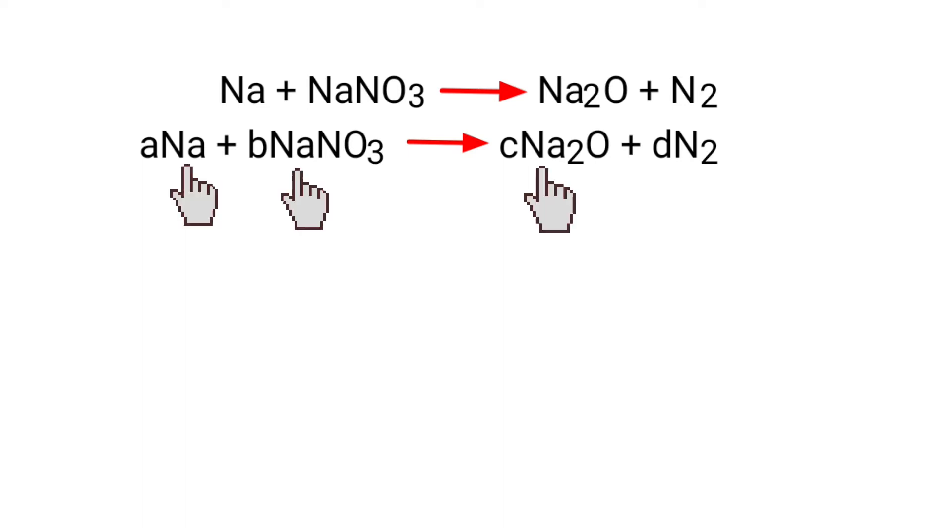For sodium, A plus B is equal to 2C. For nitrogen, B is equal to 2D. For oxygen, 3B is equal to C.